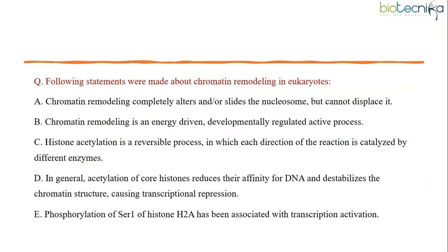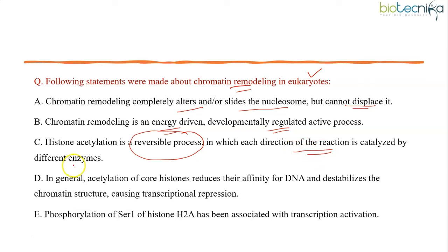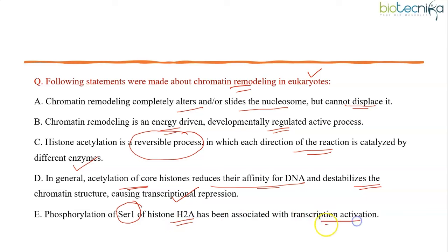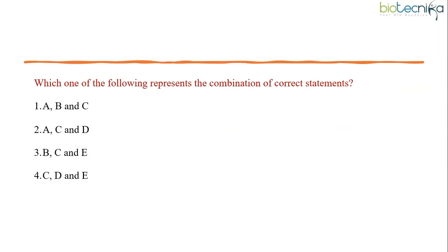The last question is regarding the chromatin remodeling complex in eukaryotes. Statement A: chromatin remodeling completely alters or slides the nucleosome but cannot displace it. Statement B: it is an energy-driven, developmentally regulated active process. Statement C: histone acetylation is a reversible process in which each direction of the reaction is catalyzed by different enzymes. Statement D: acetylation of histone proteins reduces the affinity for DNA, destabilizes chromatin structure, thereby causing transcriptional repression. Statement E: phosphorylation of serine-1 present in H2A is associated with transcription activation. The answer is statements B, C, and E are correct.